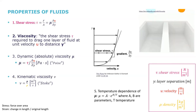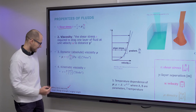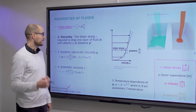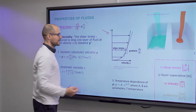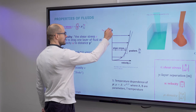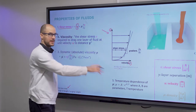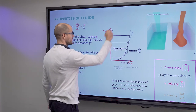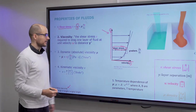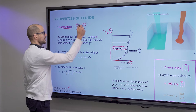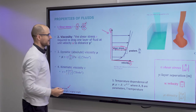Moving on to physical properties of fluids — first, shear stress. Stress means force over unit area. If we look at a diagram of dimension and velocity, imagine this as a channel with a wall on one side. The dimension runs from the wall toward the other side. Shear stress can be denoted as a vector which causes a displacement, with a velocity of u.